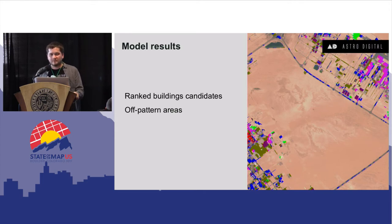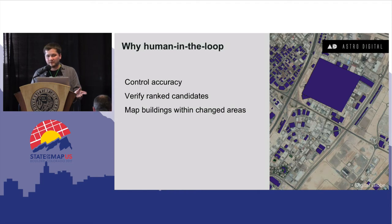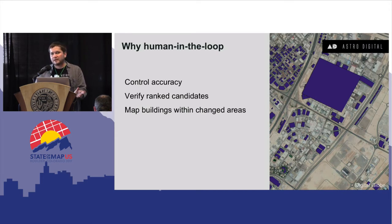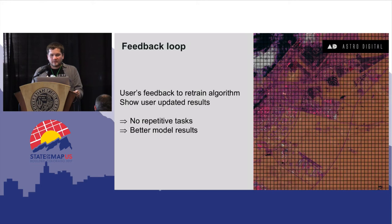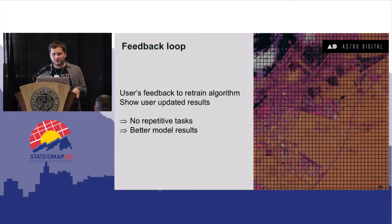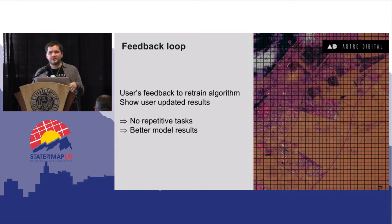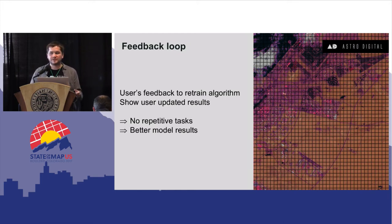To solve this, one of the best approaches is to add a human in the loop. Human-in-the-loop allows you to control accuracy, verify ranked candidates, or find out exactly what happened in changed areas. This builds a feedback loop: the model produces results, a user validates them, passes feedback back to the model, and the model retrains and shows the user updated results. That way, a user doesn't have to validate 100 results — they can validate 10 or 15 with the same outcome. The model overall produces much better results than without human supervision.